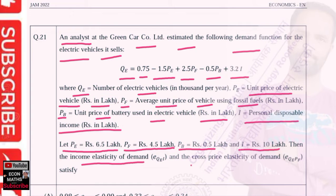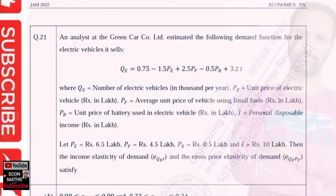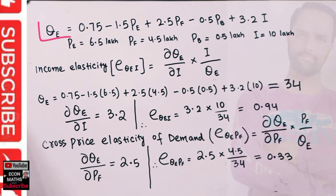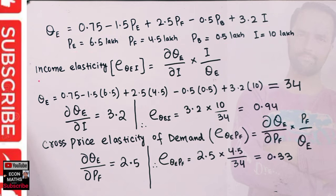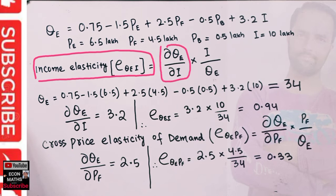We need to find the income elasticity of demand and cross price elasticity of demand. Income elasticity of demand is calculated as dQe/dI multiplied by I divided by Qe — that is, the derivative of the demand function with respect to income, times income over quantity.